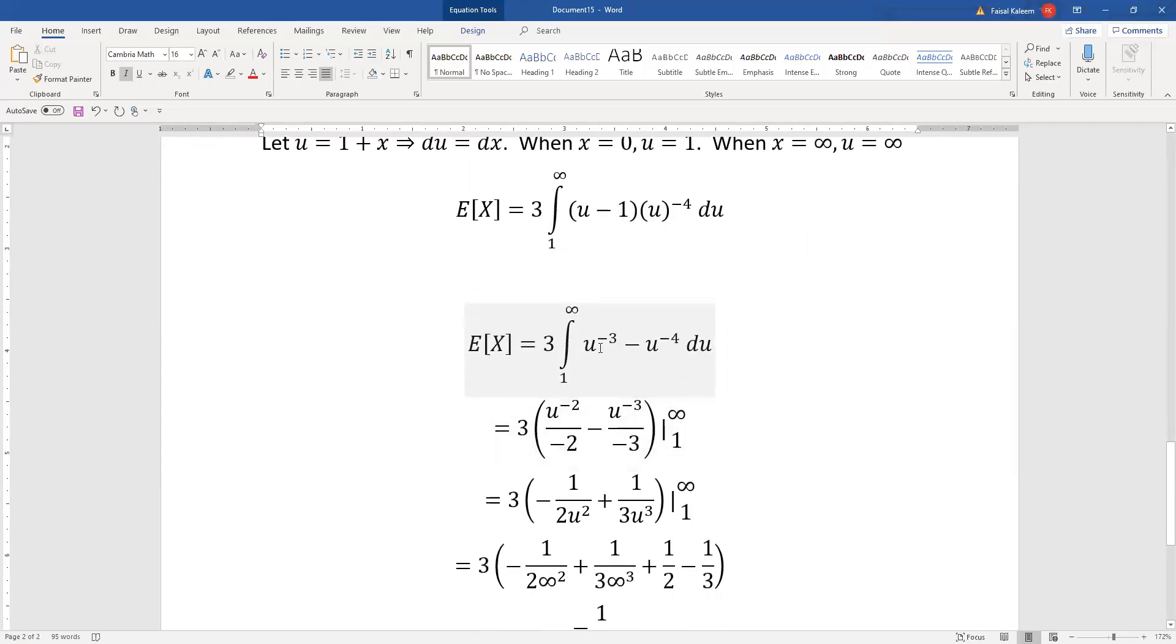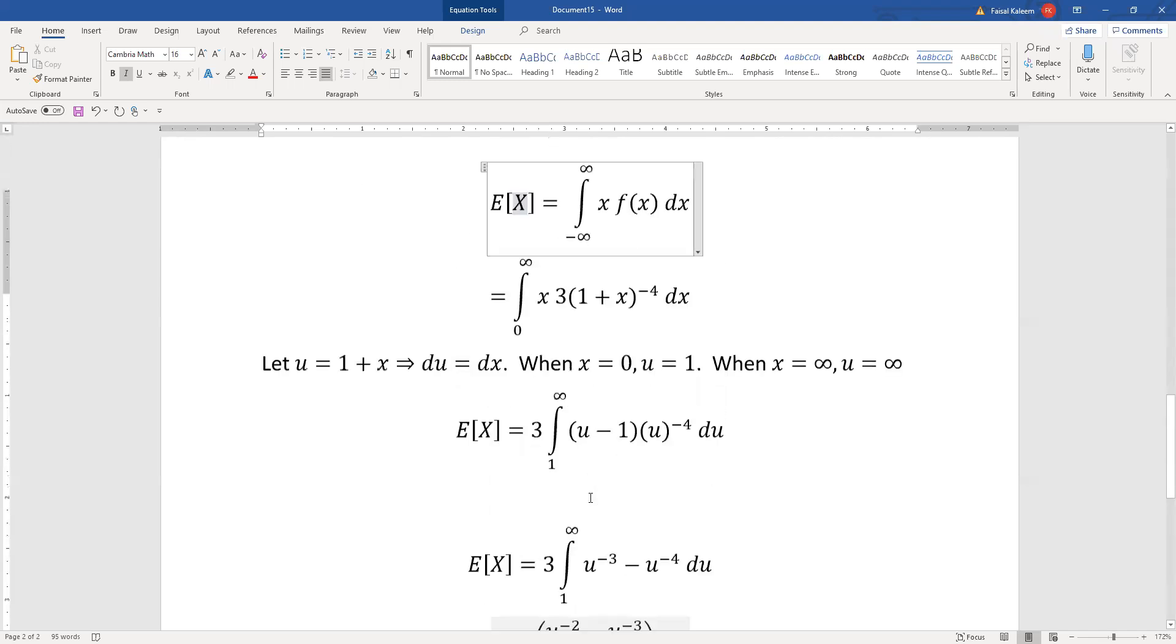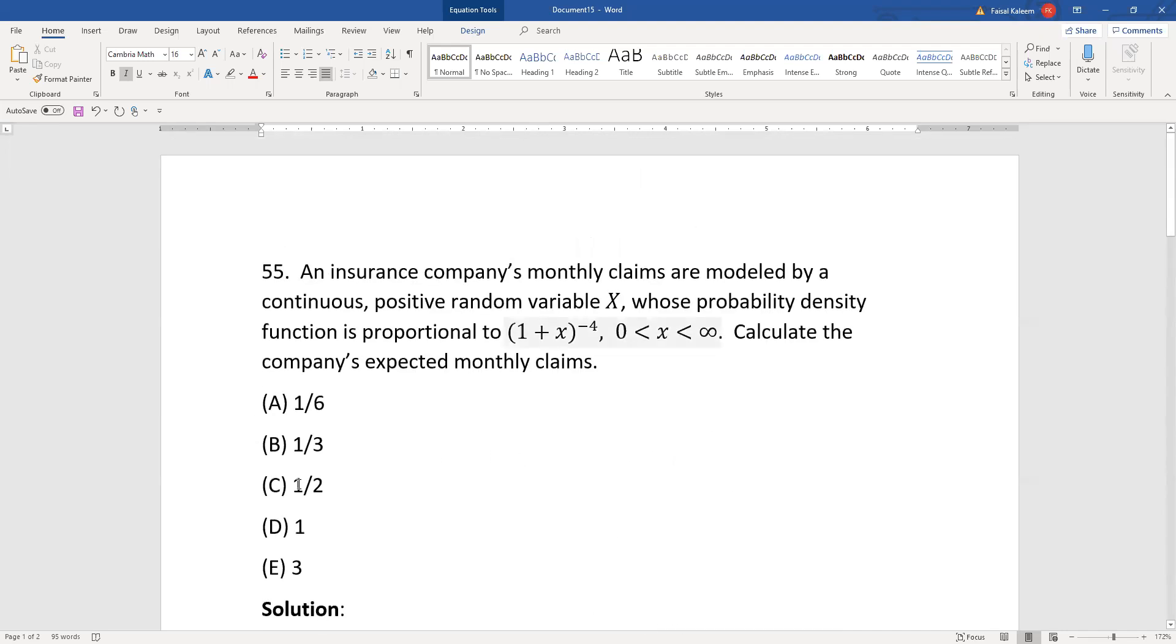And this integrates to u^(-2) over negative two, and this one to u^(-3) over negative three. And once again, when you encounter these 1/infinity terms, they are zero. It's just these terms that are going to contribute. And we have a three multiplied outside. The result of all this will be one-half, which is choice C.